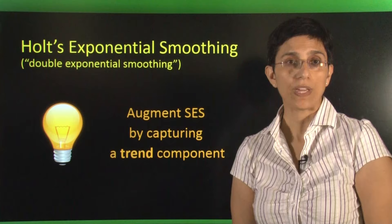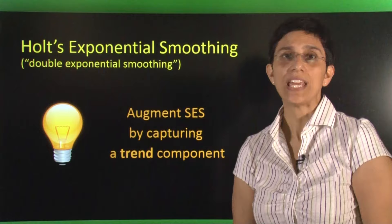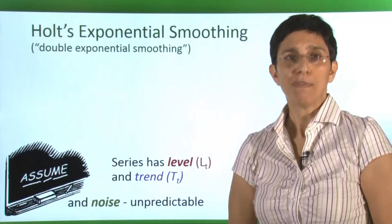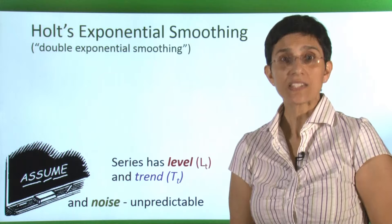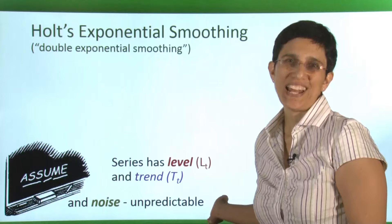Holt's exponential smoothing, also sometimes called double exponential smoothing, takes the idea of simple exponential smoothing and adds a trend component. We're making an assumption that the series has a level, a trend, and noise, but there is no seasonality. Therefore, when we compute the forecast, we take an estimated level and combine it with our estimated trend at the most recent time point. Here, k is how many steps into the future we're forecasting.